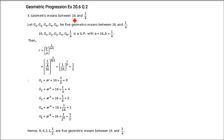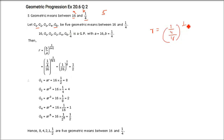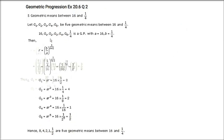Coming to the second question: insert 5 geometric means between 16 and 1/4. R = (B/A)^(1/(N+1)) with N = 5, giving R = 1/2. So G1 = AR = 8, and computing through G5 = AR⁵ gives: 8, 4, 2, 1, 1/2.